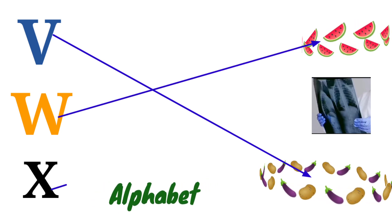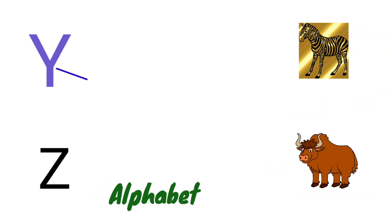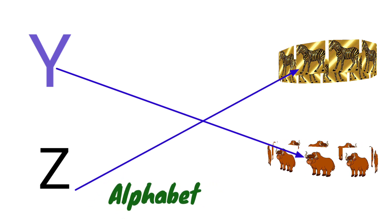V for Vegetable, W for Watermelon, X for X-Ray, Y for Yak, Z for Zebra.